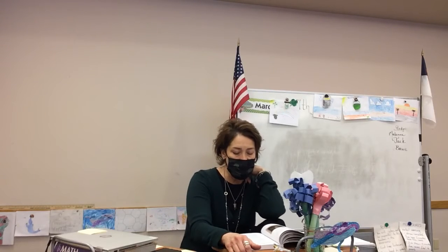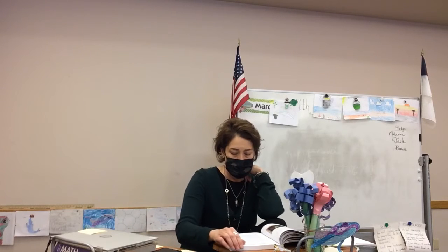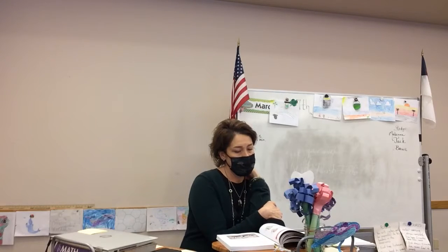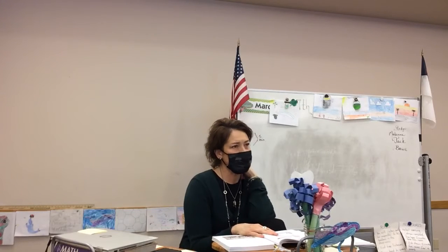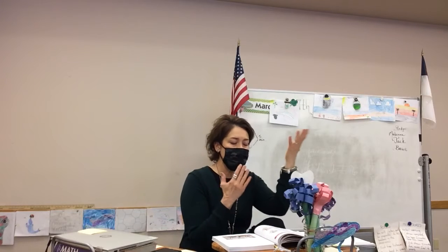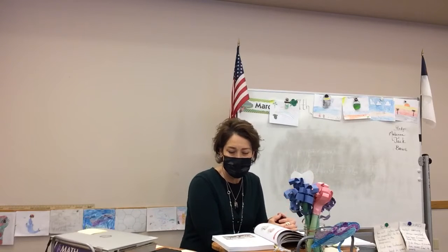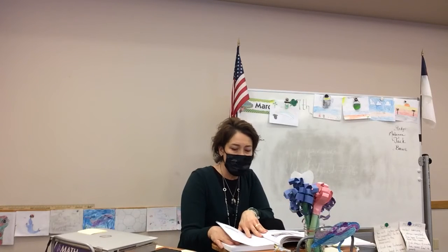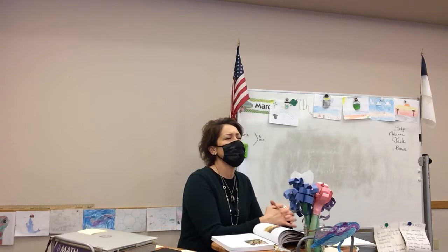Edmund Randolph became the attorney general — he was in charge of making people obey the national law. So there you have George Washington's cabinet. And if you turn the page, you see a bust or statue — there's George Washington on top, Thomas Jefferson, Alexander Hamilton, Henry Knox, and Edmund Randolph. So that is what the cabinet was. And then we talked briefly about the Western Settlement. What is the Western Settlement?